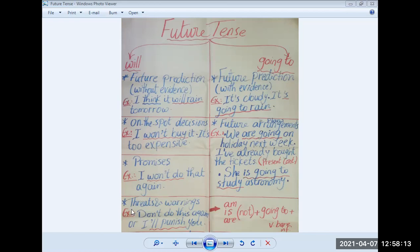Will can also be used for threats and warnings. For example, don't do this again or I'll punish you. So here I'm threatening. Where is the future form? Will punish.